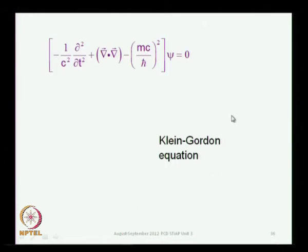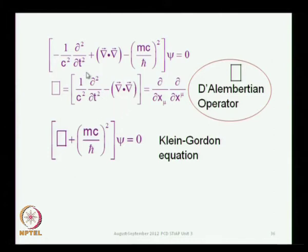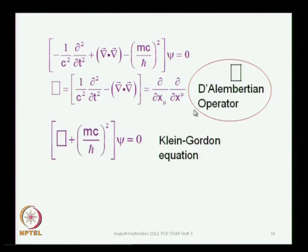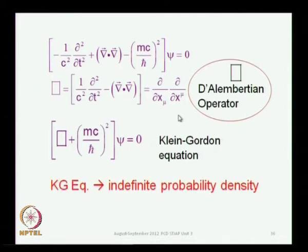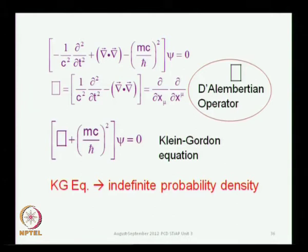The equation you get by having the operator act on the wave function psi is the Klein-Gordon equation. Sometimes it is written in a different notation, because the operator — which is a set of gradient-like or Laplacian-like operators involving second derivatives with respect to both time and space — is sometimes called the d'Alembertian operator, written as a box. This is your Klein-Gordon equation. The difficulty with that equation is that it leads to an indefinite probability density, and there are other fairly complex issues, some of which can be handled and some of which cannot.